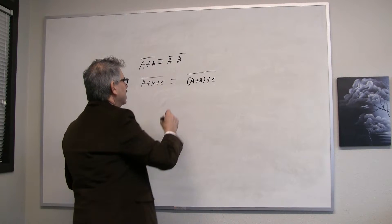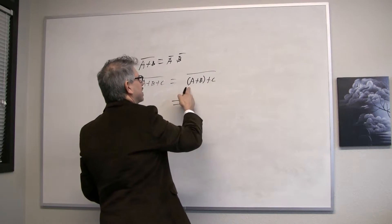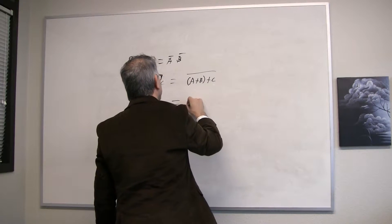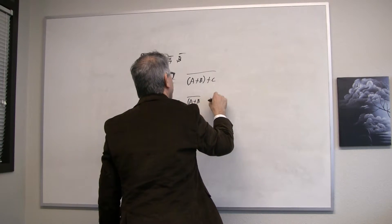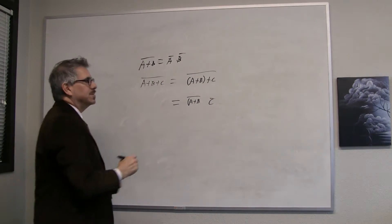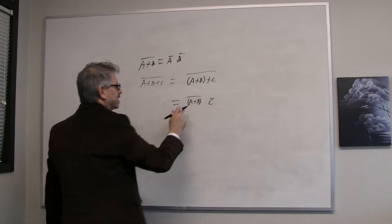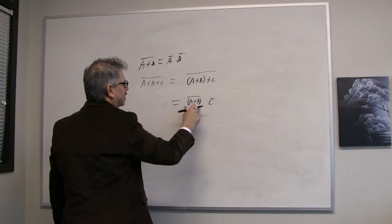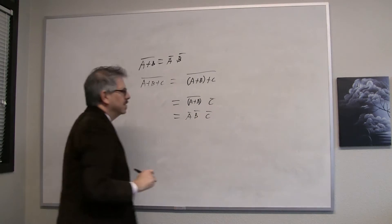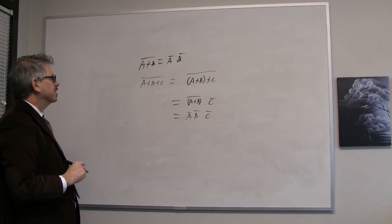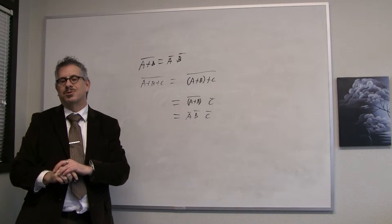De Morgan's Theorem says that's the complement of this first term, so A or B bar, ANDed with the complement of the second term, C. And De Morgan's Theorem again tells us that the complement of A or B is A bar B bar, and that gets ANDed with C bar. So we have a three variable version of De Morgan's Theorem.